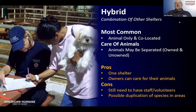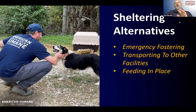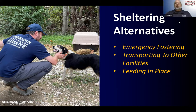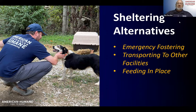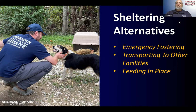One of the things I want to talk about is sheltering alternatives, which are gaining in popularity. Across the United States especially, we're looking at emergency fostering — finding people who can foster animals in need instead of sheltering. There are peer-to-peer fostering programs where the person needing fostering can reach out directly, keeping emergency management and rescue groups out of it.